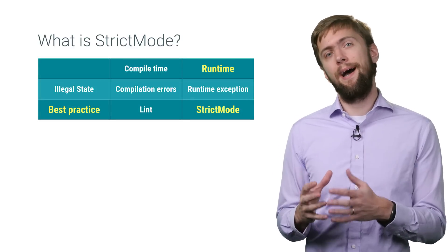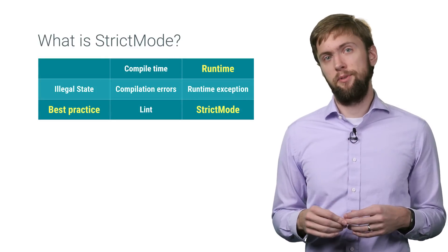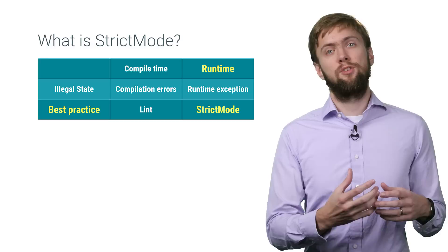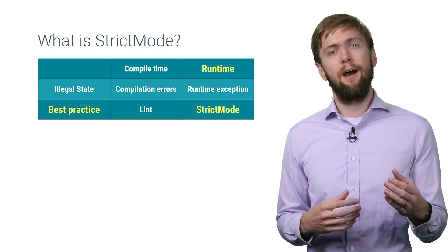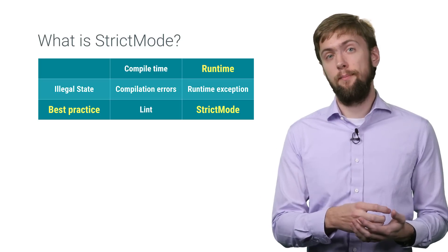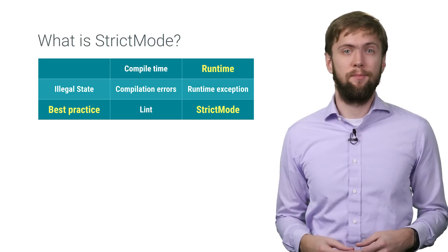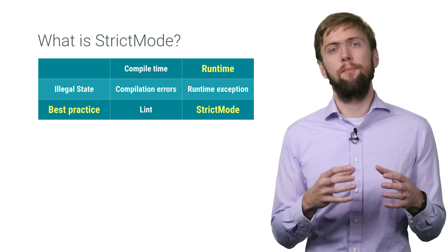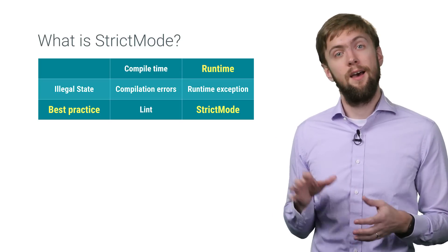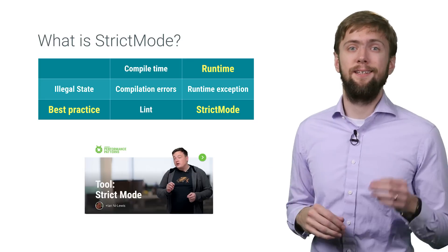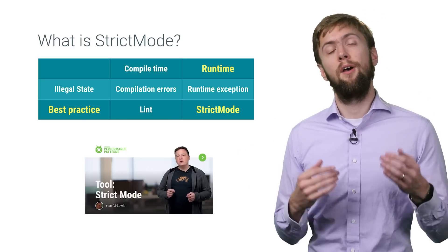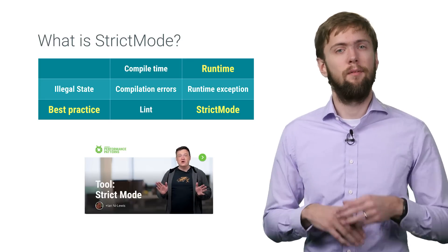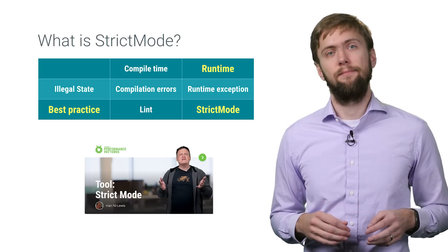If lint checks are the Android-specific compile time problems that can tell you about issues, strict mode is the runtime equivalent, pointing out issues that we can detect at runtime so you can fix them early. Much of strict mode is performance-focused. The other Ian does a great job talking about those features in his video, as well as the basics of strict mode.